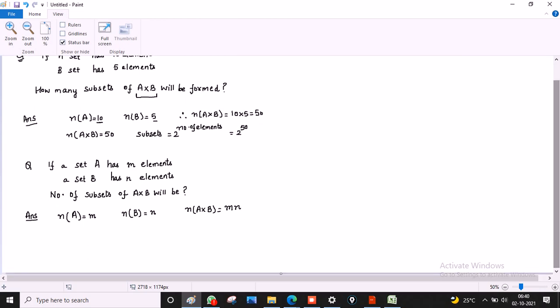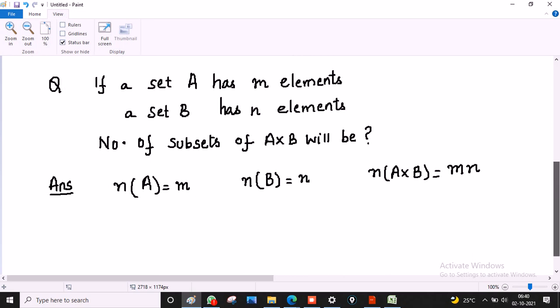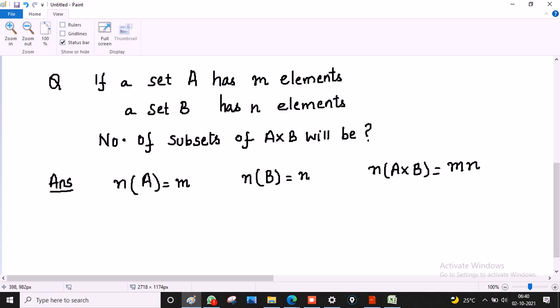So now, we have the number of elements in A cross B is mn. In A cross B, how many subsets will there be? The answer is 2 raised to mn.